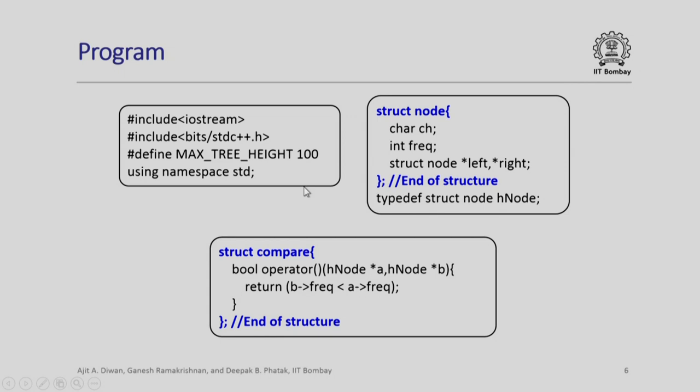Let us look at the program. This is the standard initial thing where we are defining maximum tree height as 100 which is an arbitrary thing. The node is defined as char ch, int frequency and left and right. You will notice one important thing.